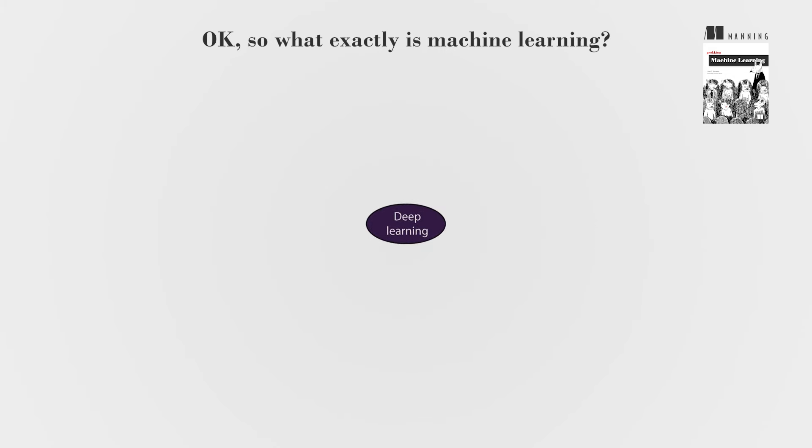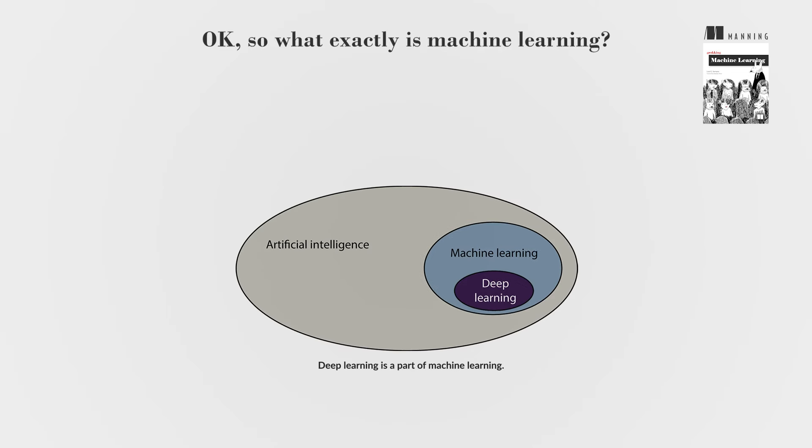Deep learning, a subset of machine learning, uses neural networks and excels in tasks like image recognition and self-driving cars. It's the high-performance vehicle of the AI world.